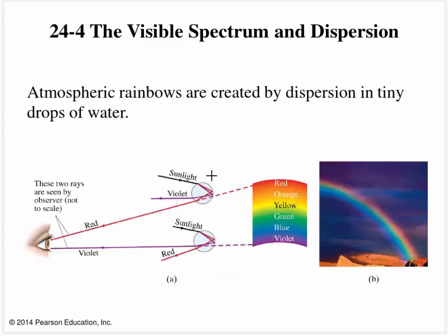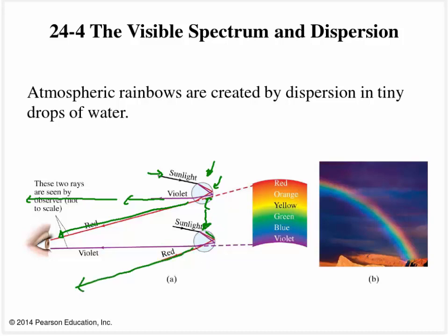It turns out this is how we actually see rainbows. We have rain droplets and sunlight (white light) coming in. Red light bends differently than violet light as it goes through a droplet. For a droplet high in the sky, the violet light misses the observer's eye while the red light enters it. A little lower down, another raindrop is positioned where the red light misses the observer but the violet light enters. In between, all the various droplets correspond to all the different colors between violet and red. What it all boils down to is dispersion — spreading out the colors of white light.